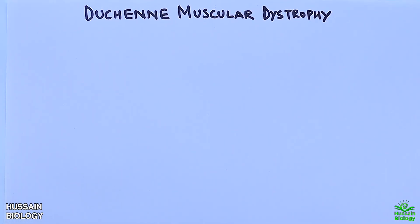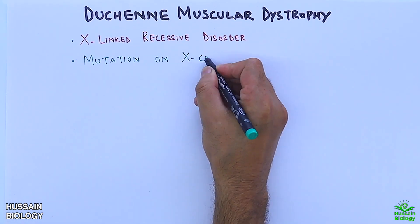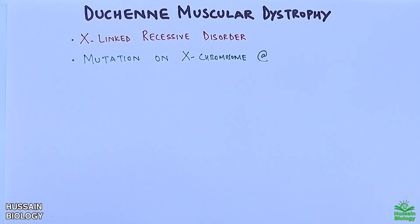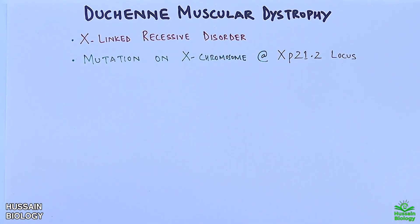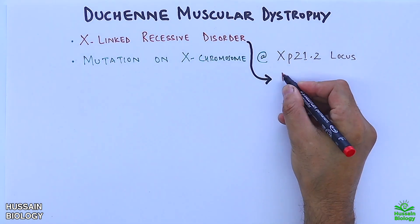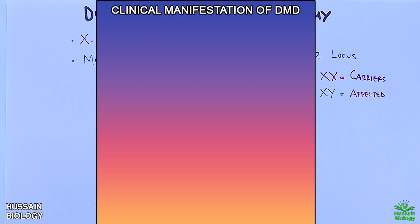Duchenne muscular dystrophy is an X-linked recessive disorder which is due to mutation of a gene on the X chromosome at the Xp21.2 locus. As we know, Duchenne muscular dystrophy is inherited in an X-linked recessive pattern, so all females typically are carriers while males are affected.